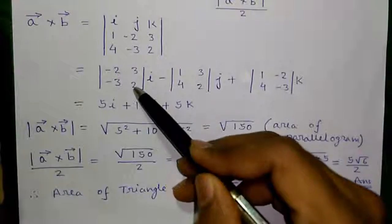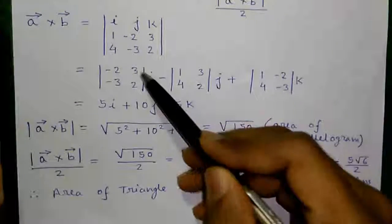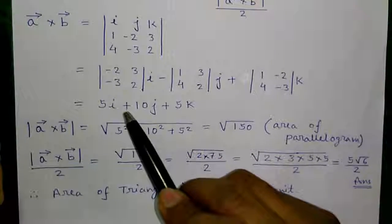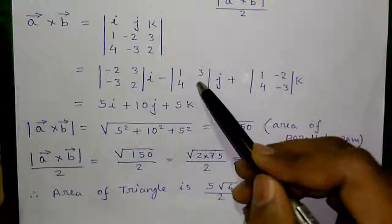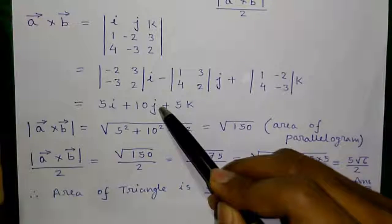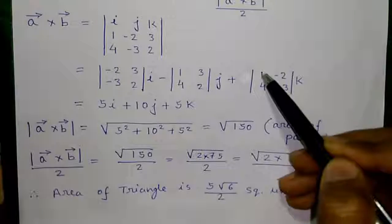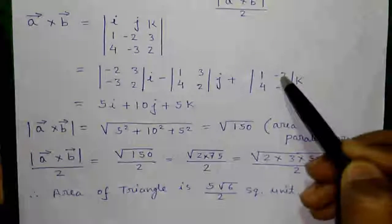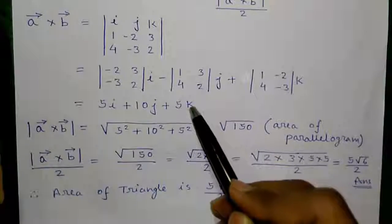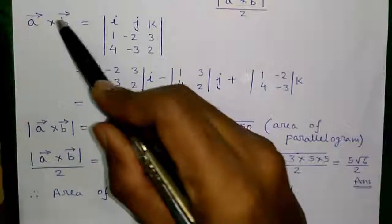That's equals to this number into this number minus this number into this number into I which is plus 5i minus this number into this number into J. That's equals to plus 10j plus this number into this number minus this number into K that is plus 5k. So this is the resultant vector of cross products of vector A and B.